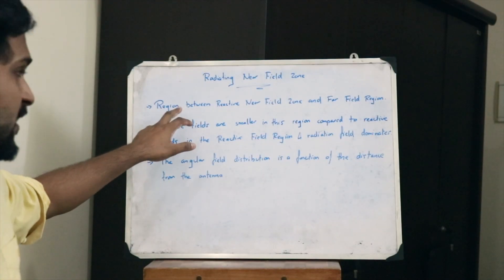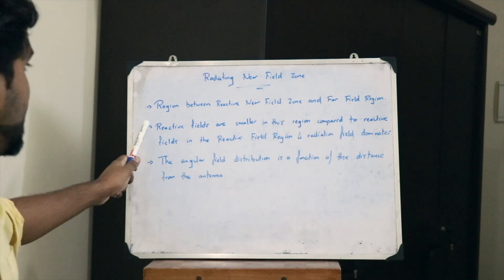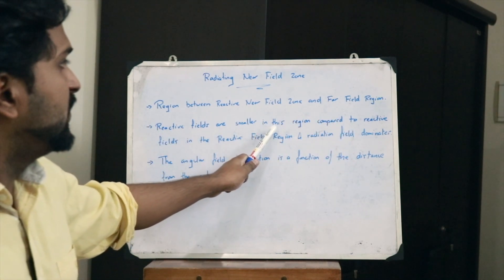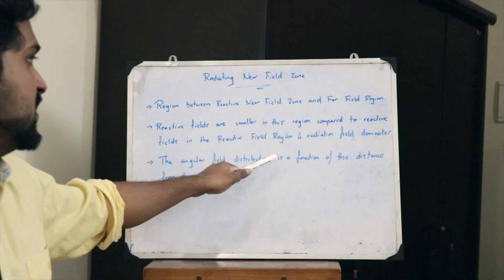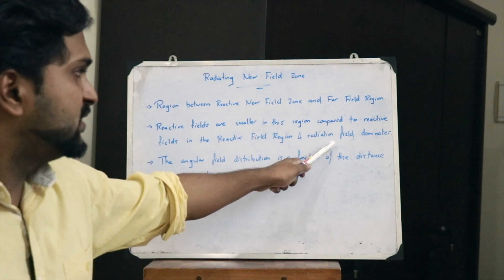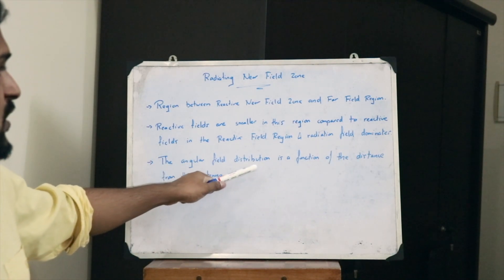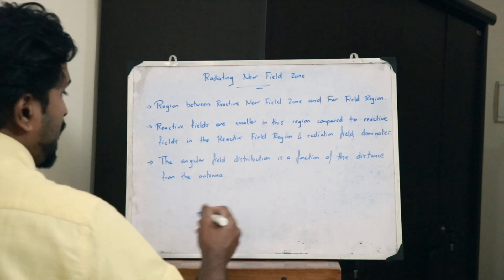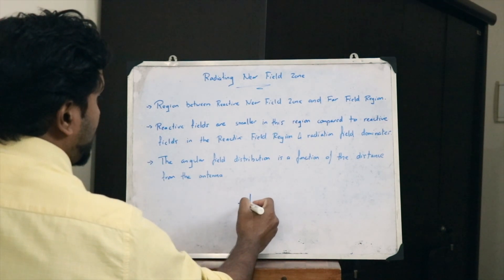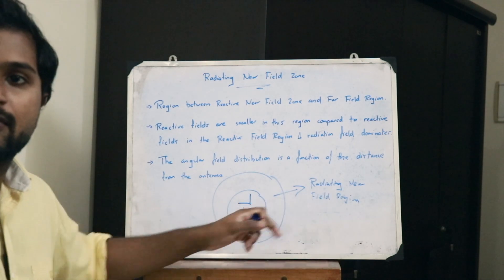So it is the region between the reactive near field zone and the far field region. The reactive fields are smaller in this region compared to the reactive fields in the reactive field region, and therefore the radiation field dominates. The angular field distribution is a function of the distance from the antenna. So when we consider a particular dipole antenna, this is the radiating near field region.